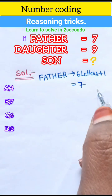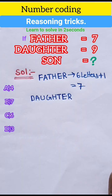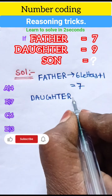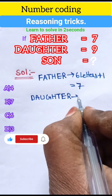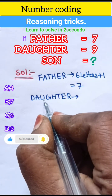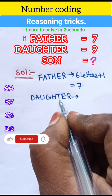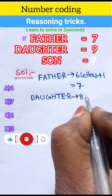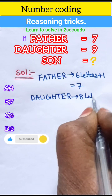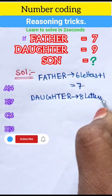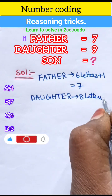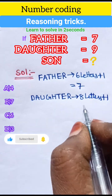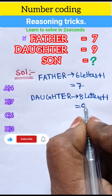And next is daughter. So daughter — how many letters are? 3, 6 and 8. So 8 letters. And plus 1 are. So total length is 9.